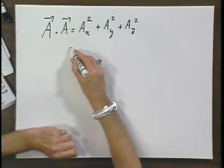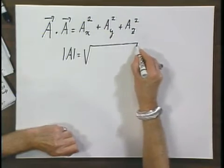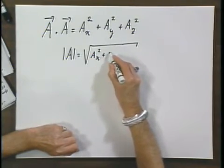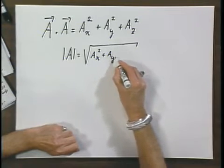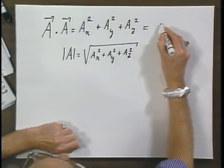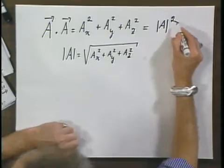Now keep in mind that the magnitude of a itself is the square root of a x squared plus a y squared plus a z squared. So this is nothing but the magnitude of a squared.